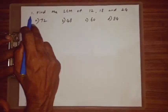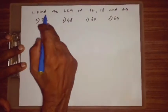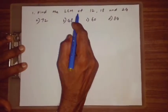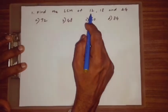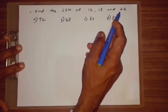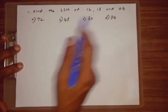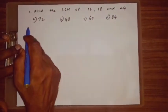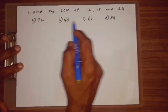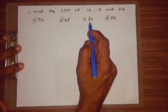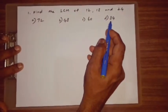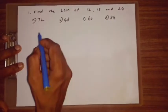Q1. Find the LCM of 12, 18 and 24. Option A: 72, B: 48, C: 60, D: 84.